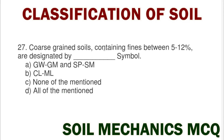Next question: coarse grained soil containing fines between 5 to 12% are designated by which symbols? Option A GW, GM, SP, and SM; option B CL, ML; option C none of mentioned; option D all of mentioned. The correct answer is option A: GW, GM, SP, and SM.